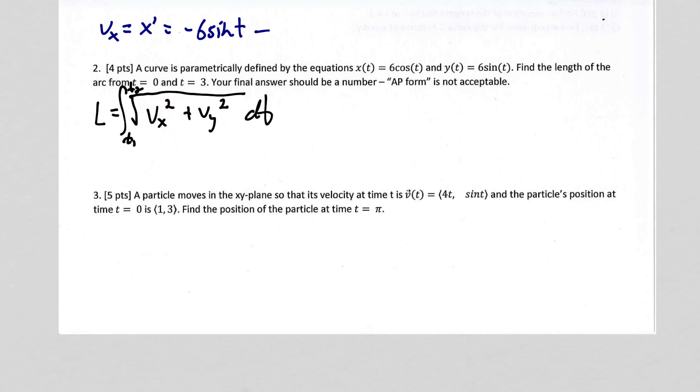Right, so vx squared is negative 6 sine t squared, which the negative is going to get squared out. So I'm going to get 36, and then I'm going to get sine squared of t.